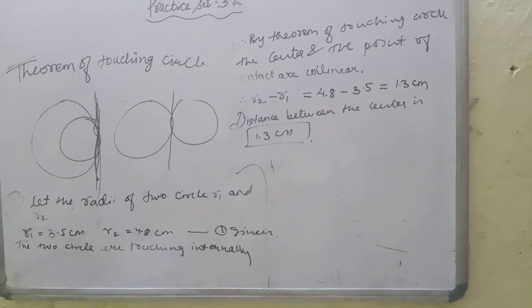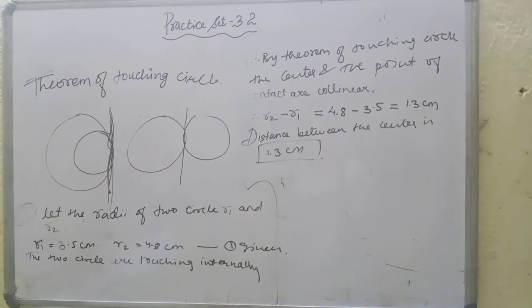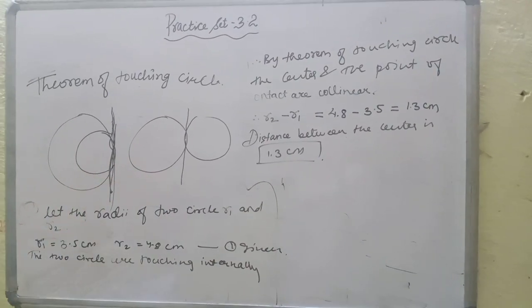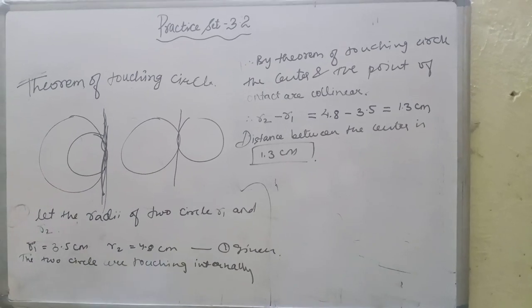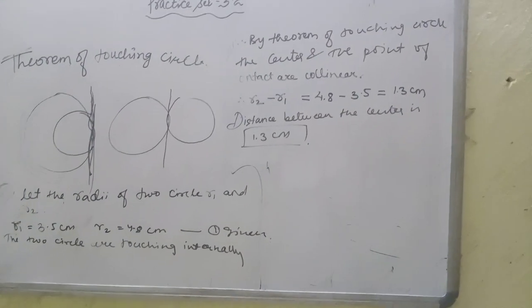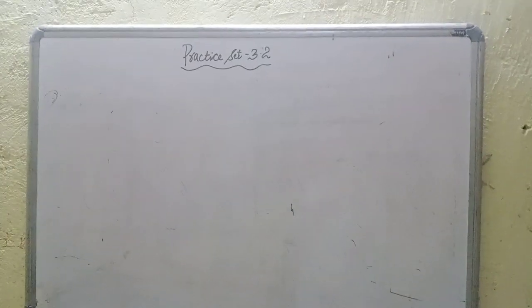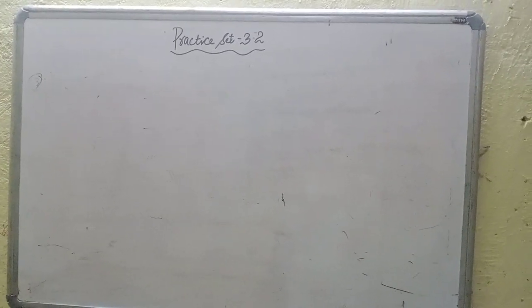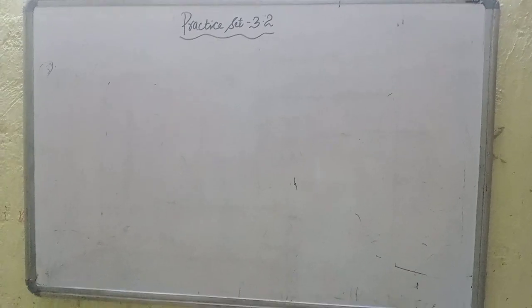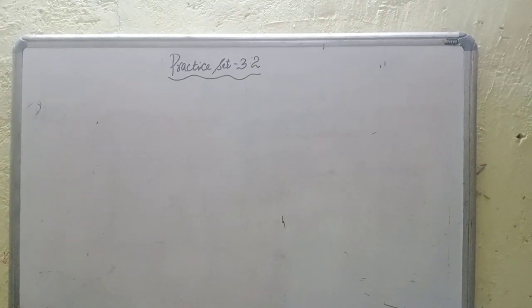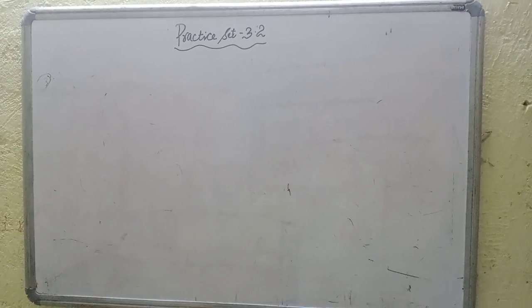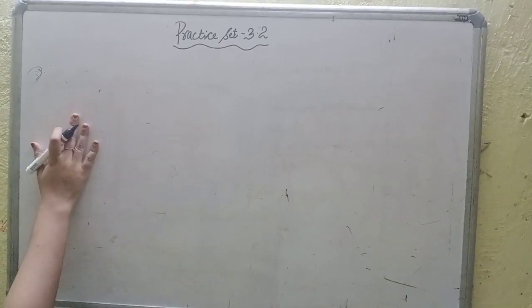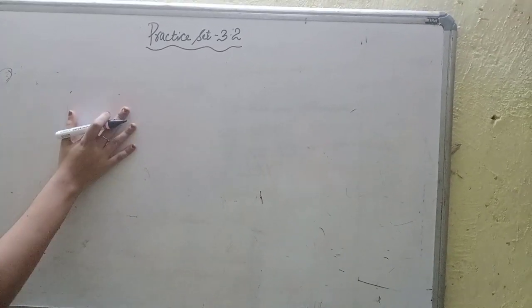Second question is similar. Only the difference is this circle are touch each other externally. Not internally. Rest is the same. Third question, the radii of two circles are 4 cm and 2.8 cm. Draw figure of these touching circles externally or internally. We have to draw both circles internally and externally. First we have to take the circle and then start with 4 cm and 2.8 cm. That's easy.